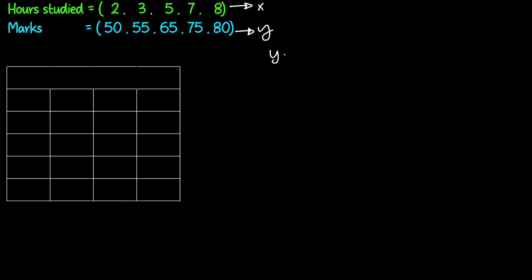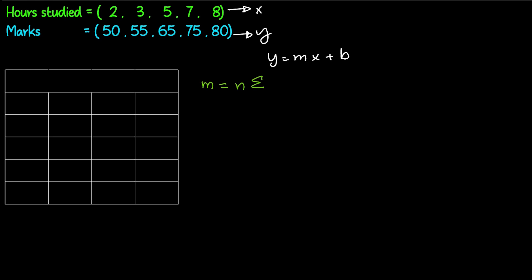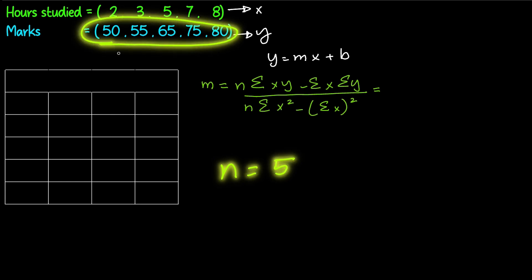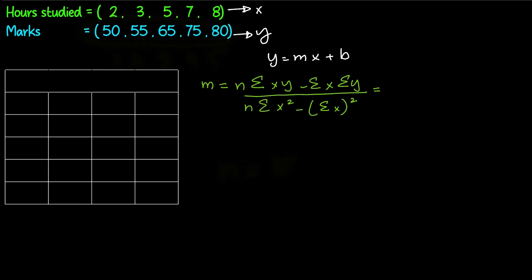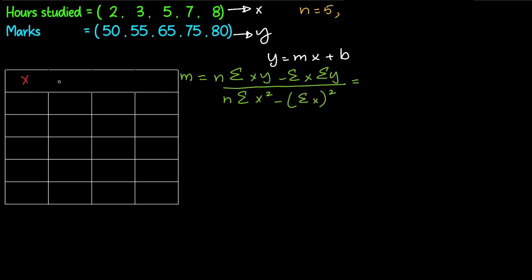First, we will find m, whose formula is on your screen. N is equal to 5; n is the number of datasets we have. To find m, we need sum of x, sum of y, sum of x times y, and sum of x squared.